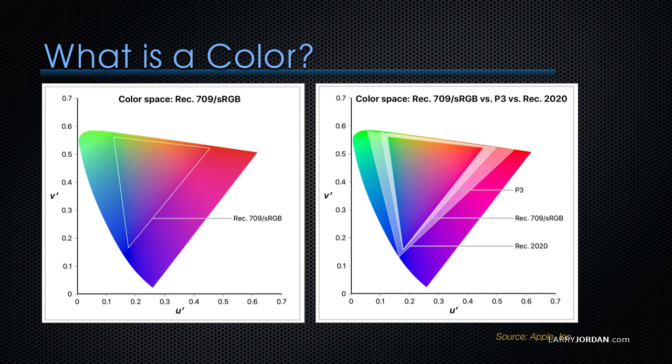The color triangle on the left represents the big, which is colorful. That represents all the colors that our eye can see. The inner triangle is the number of colors, the range of colors, that are covered with Rec. 709. And remember, whenever I say Rec. 709, think HD, high-definition media.